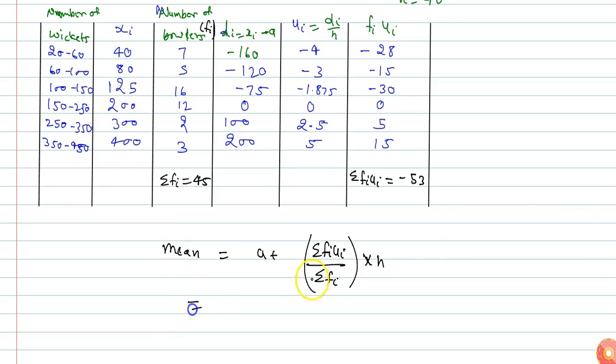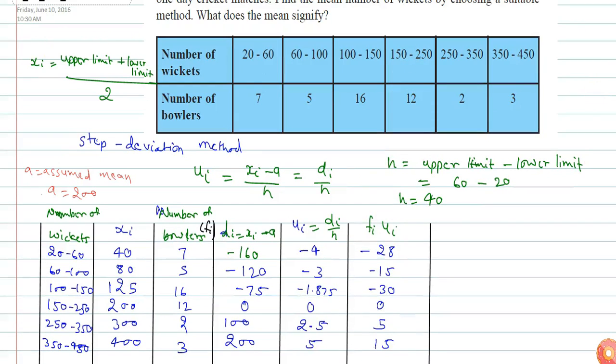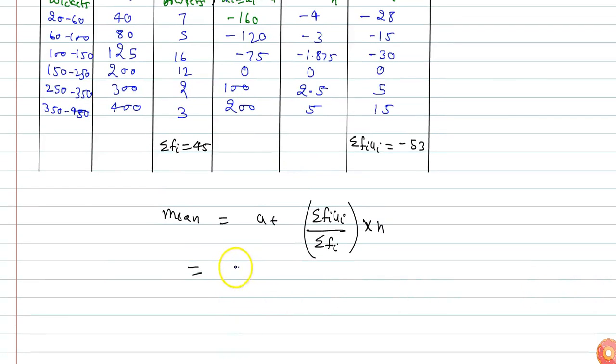The assumed mean is 200, so 200 plus summation fi ui is minus 53, summation fi is 45, and h is 40.